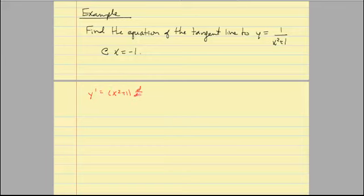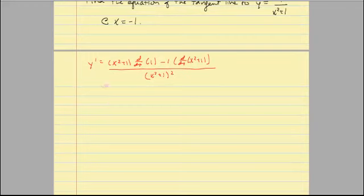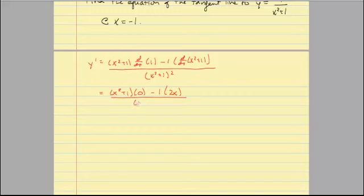Applying the quotient rule: bottom times the derivative of the top minus the top times the derivative of the bottom, all over the bottom squared. The derivative of 1 is 0, so that first term falls away. The derivative of X squared plus 1 is 2X. This gives negative 2X all over (X squared plus 1) quantity squared — the slope of the tangent line at any point along the graph.